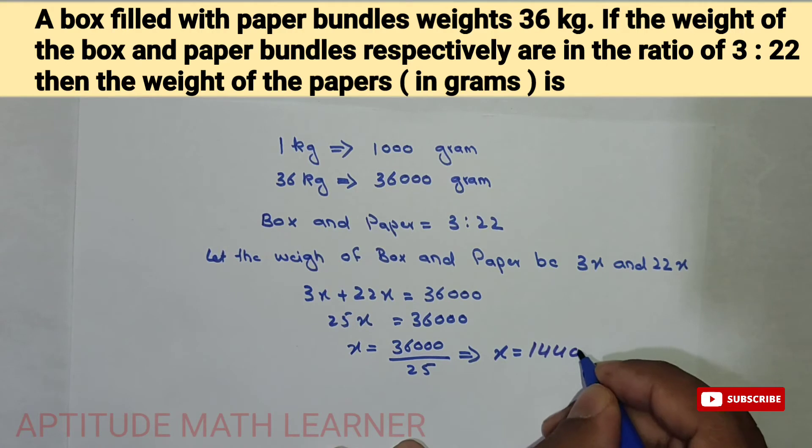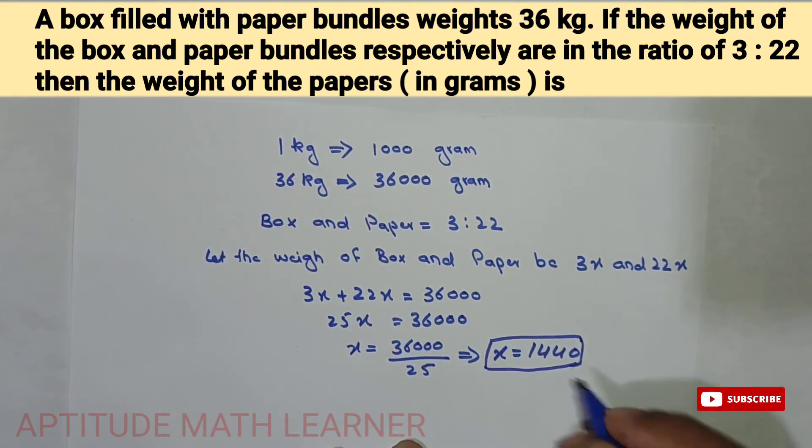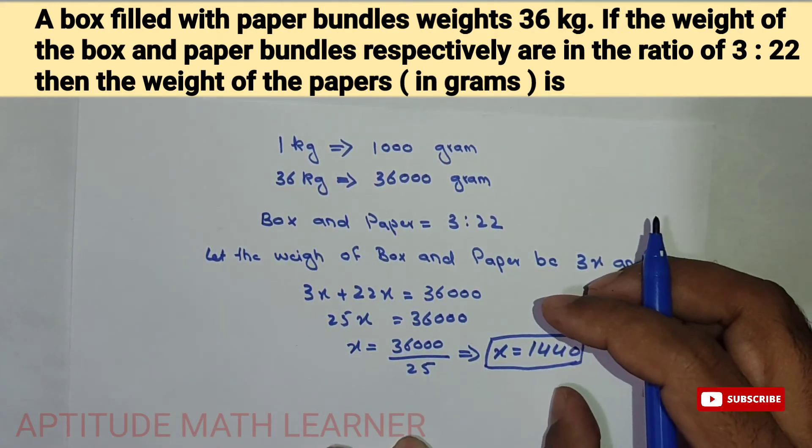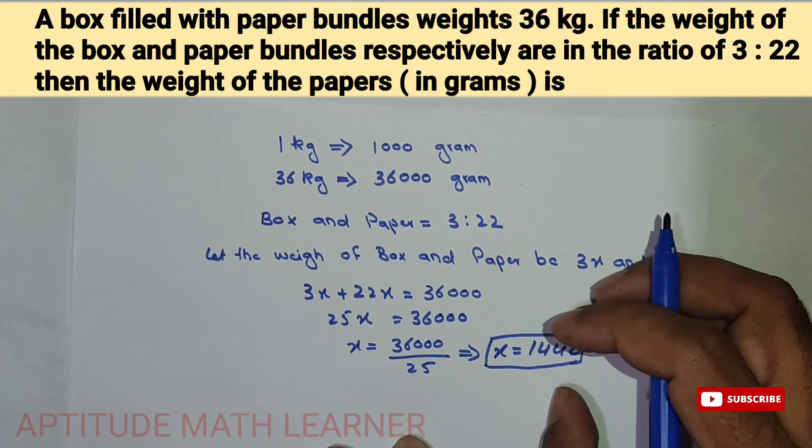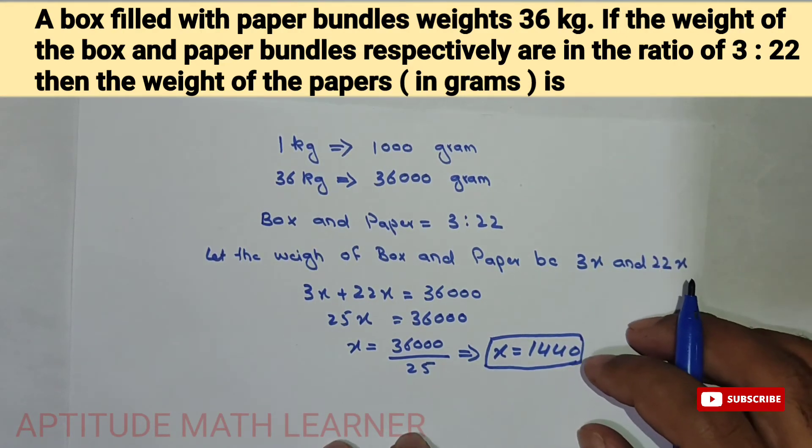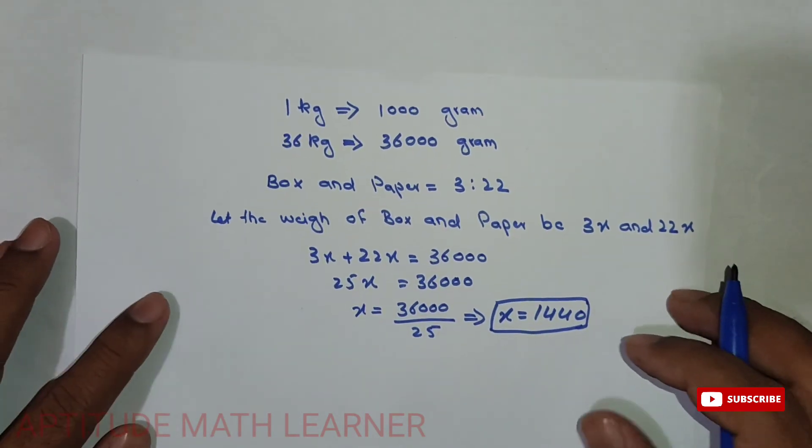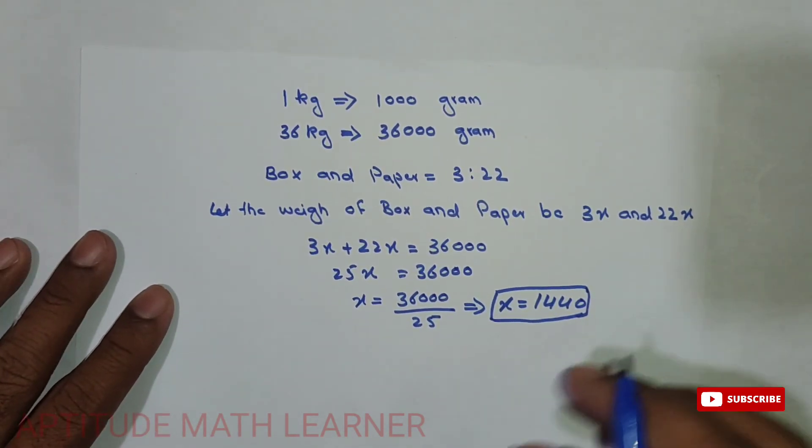So here we have got the value of x. So now we have to find the weight of the paper in grams. So we have already converted 36 kilograms into grams.